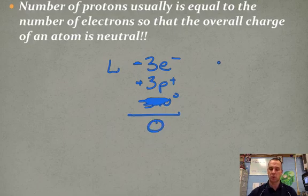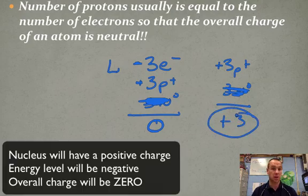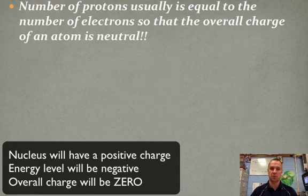But what's the charge of the nucleus? The nucleus has the protons and the neutrons in it. These have no charge. So the nucleus has a positive charge. The nucleus will always have a positive charge because it has protons.